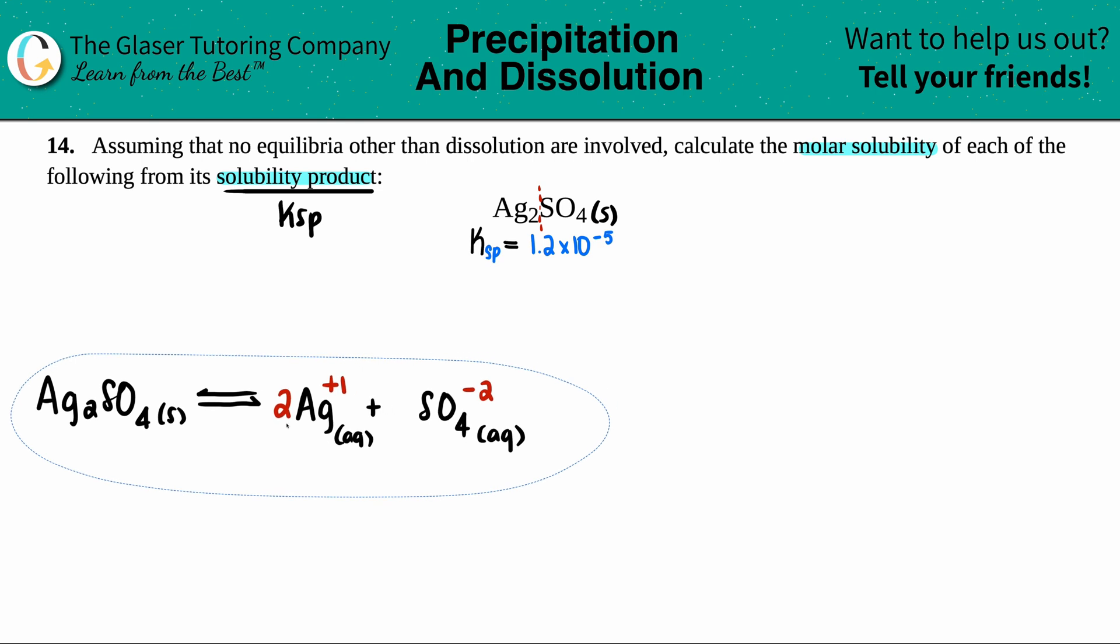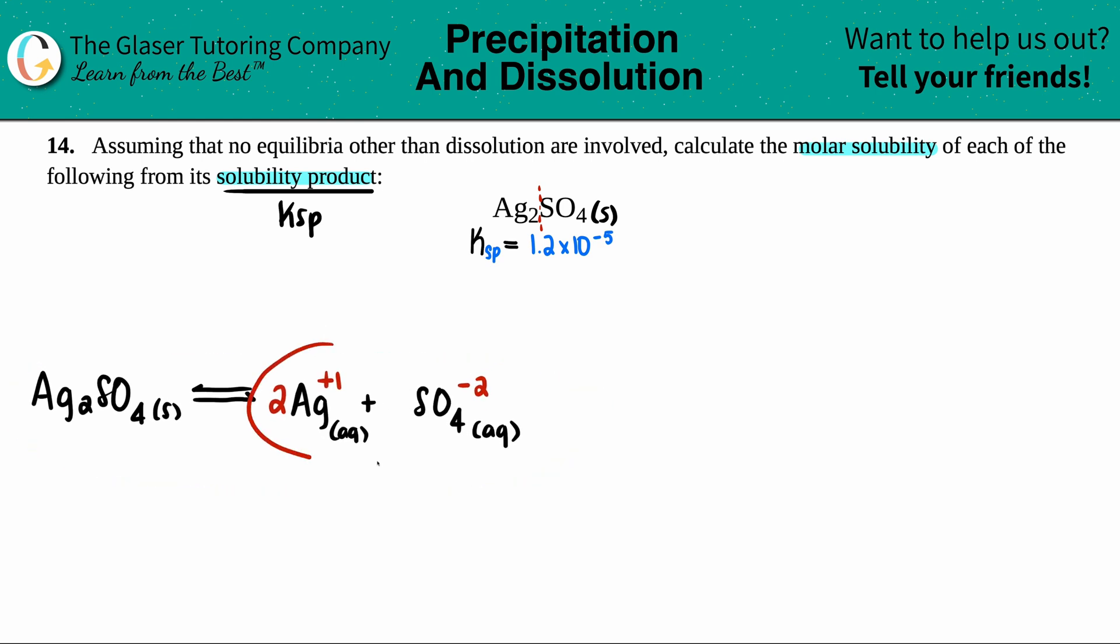And now I'm going to use this to find out what the formula for the KSP is for this problem. Well, the general formula for KSP is this, right? It's just equal to the concentration of the products raised to the coefficients. No reactants, because remember, no solids allowed in any K expression. So for this one, we got KSP equals to the concentration of the two products, Ag plus and SO4 two minus.